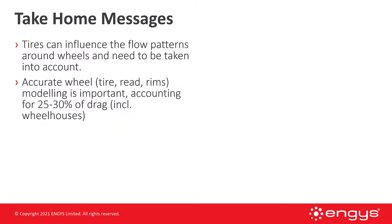Let me leave you with a few take-home messages. Tires can influence the flow patterns around wheels and need to be taken into account. The flow around tires with wheel houses, rims, calipers, brakes, and suspension can be very complicated. Accurate wheel models — meaning tires, treads, and rims — are important and can account for 25% to 30% of overall drag, including the wheelhouse. Because aero simulation is really a keystone simulation task, results may translate into acoustics, soiling analysis, or underhood thermal analysis, so we need as much accuracy as possible in this step.